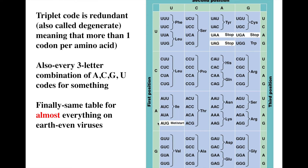Some amino acids are coded for by a single codon, such as methionine and tryptophan — UGG. But most have multiple codons that code for one amino acid. Every three-letter combination of A, G, C, or U codes for something — either an amino acid or a stop codon. This codon table is almost the same for everything on earth, including viruses, which is more evidence of the common origin of life.